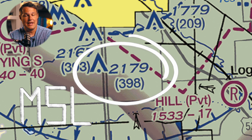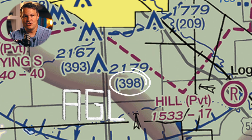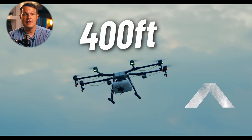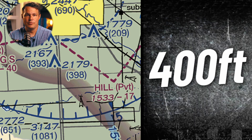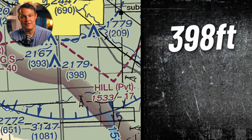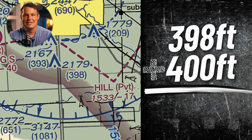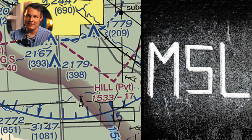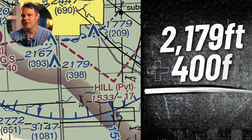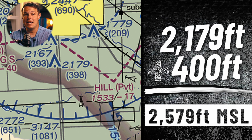The third reason people get tripped up is that they just don't read carefully — and the FAA will try to trick you. The chart shows the tower is 2,179 feet MSL, and below that number is the AGL of 398 feet. FAA rules say drones are allowed to fly 400 feet above a structure. Adding 400 to 398 feet AGL gives us 798 feet AGL. Adding 400 to 2,179 feet MSL gives us 2,579 feet MSL.